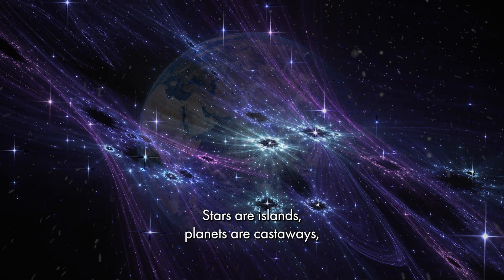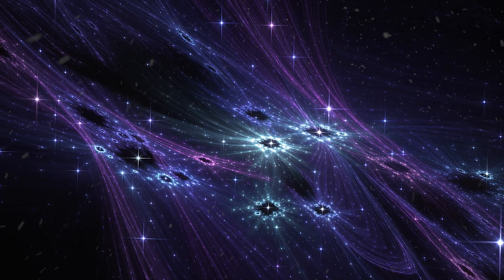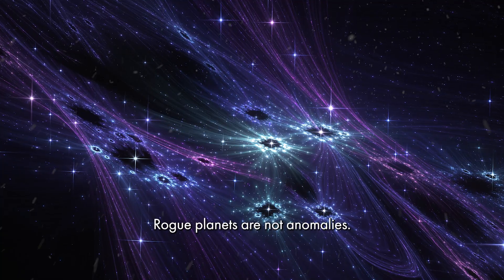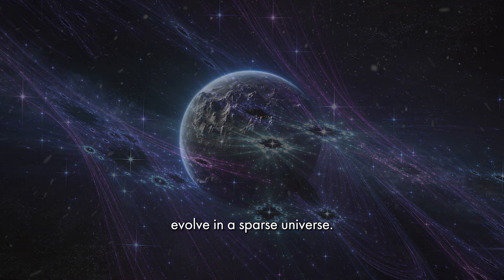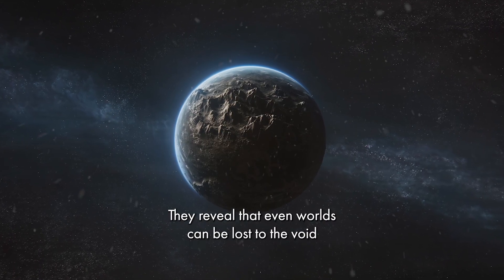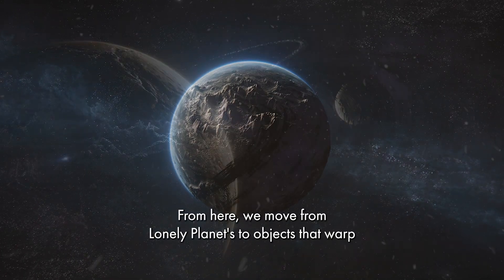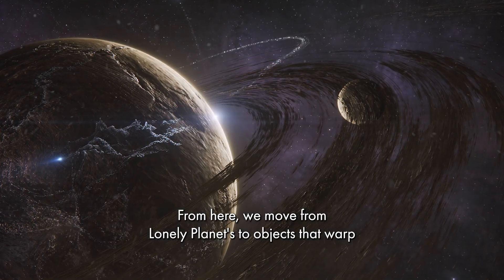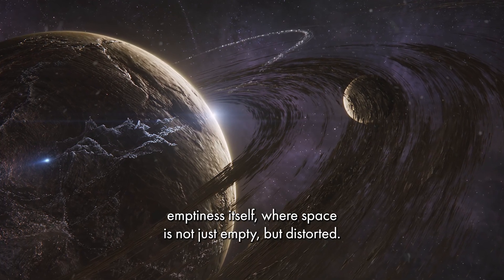Stars are islands, planets are castaways, and space between them is overwhelmingly empty. Rogue planets are not anomalies. They are a natural outcome of how planetary systems evolve in a sparse universe. They reveal that even worlds can be lost to the void, carried endlessly through darkness. From here, we move from lonely planets to objects that warp emptiness itself, where space is not just empty but distorted.